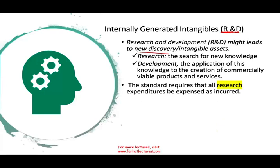The standard requires that all research expenditure — the R — is expensed as incurred. As you incur research, you expense it. The concept is straightforward: when you are incurring millions or billions of dollars to find a new product, there is no guarantee you'll find a viable product at the end. For something to be considered an asset, it must have a probable future benefit. Pharmaceutical companies spend billions and never come up with a viable product. So all research costs are expensed, not capitalized.